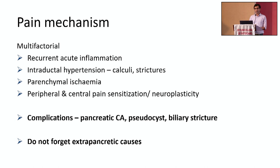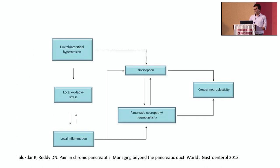It is also important to consider complications if pain is not responding to conventional management, is worsening, or is newly developed. These complications include pancreatic cancer, pancreatic cirrhosis, or development of biliary strictures. Don't forget other causes such as peptic ulcer disease, which is more prevalent in this category. The central and peripheral neuroplasticity diagram illustrates the mechanism explaining why some patients continue to experience chronic pain even after pancreatectomy.